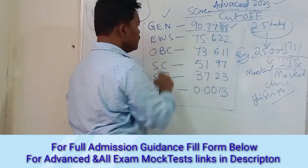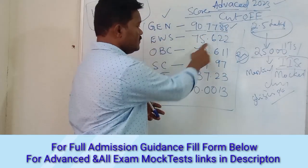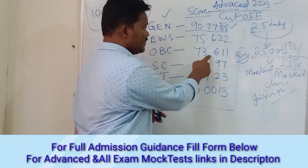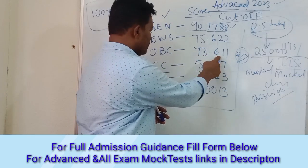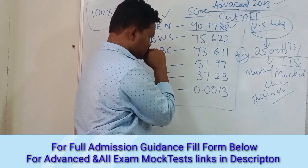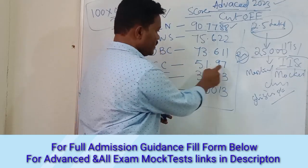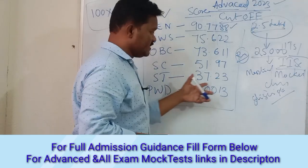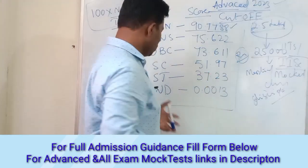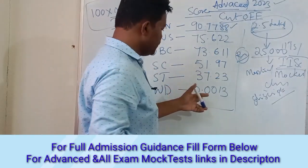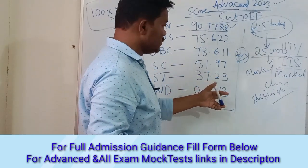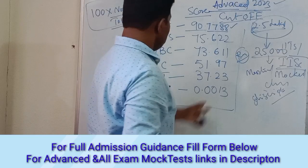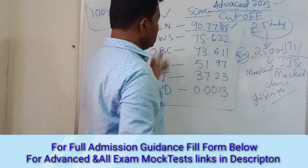EWS cutoff is 75, OBC is 73.60, SC cutoff is 51.97, ST is 37.23, and PWD is 0.0013.